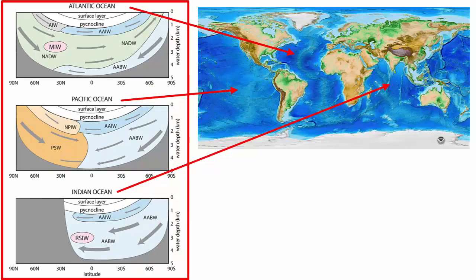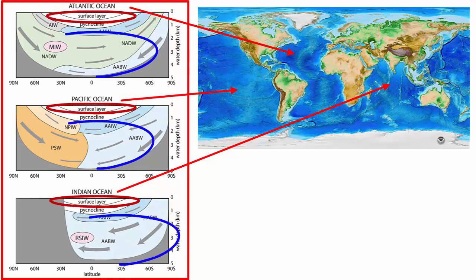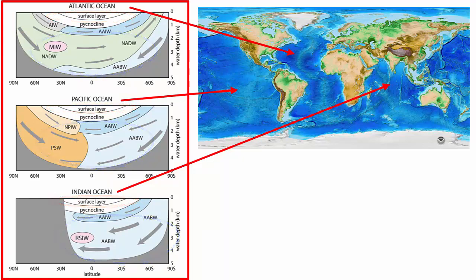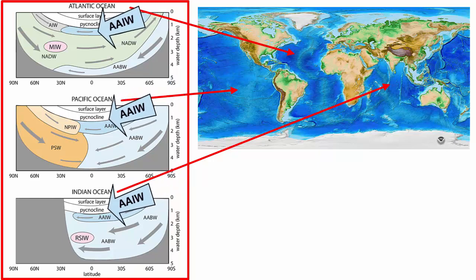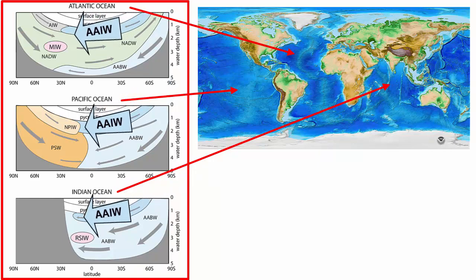This picture shows cross-sections through the three major oceans and their major thermohaline currents. Each cross-section shows a surface layer atop a number of different deep water currents. AAIW means Antarctic Intermediate Water. It originates in the oceans north of Antarctica at about 55 degrees south latitude and descends below the surface waters of the Atlantic, Pacific, and Indian oceans. It sits atop all the other thermohaline currents, which means it must be the least dense.